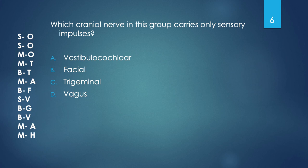I've sketched that out on the left and included the mnemonic 'some say marry money, but my brother says bigger brains matter more.' That heuristic lined up with the first one shows which function is assigned to which cranial nerve. Going down the list for only sensory nerves, there are only three — the first two O's and one V. The vagus is cranial nerve 10, so by default the answer is A, vestibulo-cochlear, which receives sensory information from the vestibule regarding proprioception and from the cochlear nerve for hearing.